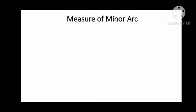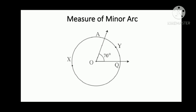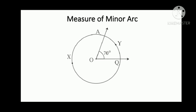Measure of a minor arc. In the given figure, the measure of angle AOQ is 70 degrees. Therefore, measure of the minor arc AYQ will also be 70 degrees. Because we know that the measure of angle subtended at the center by the arc is taken to be the measure of the arc.